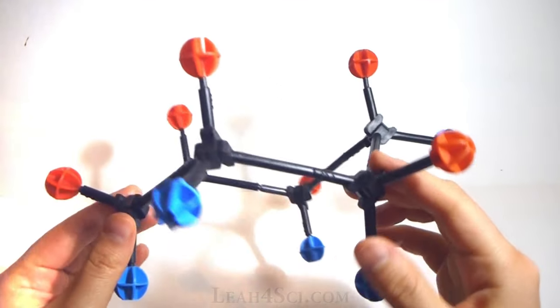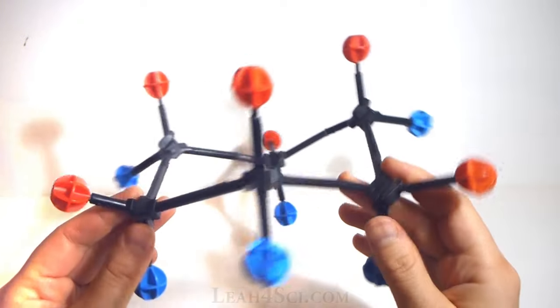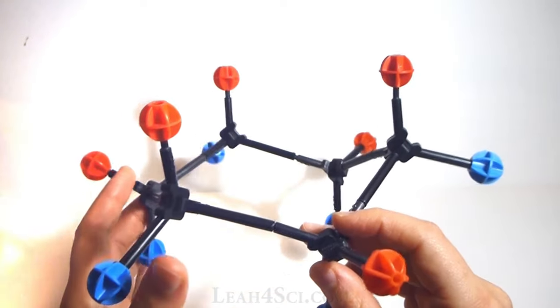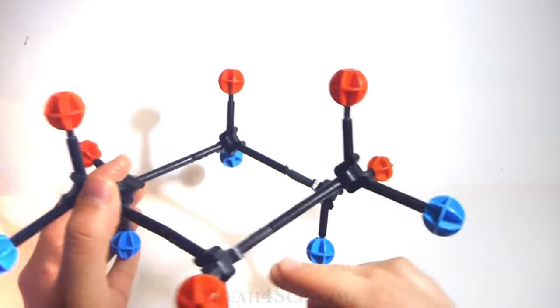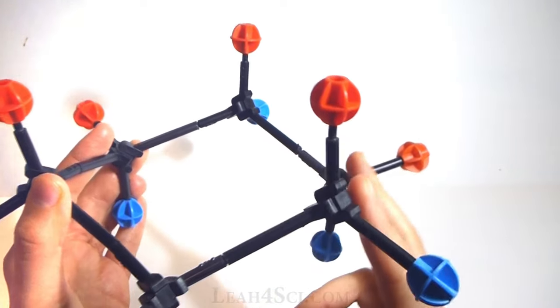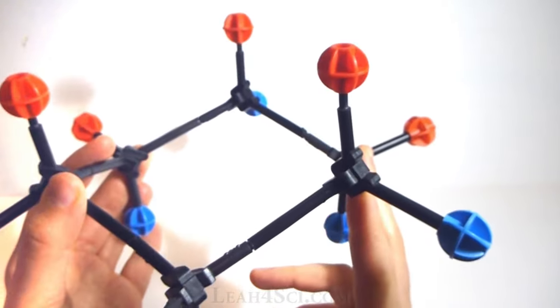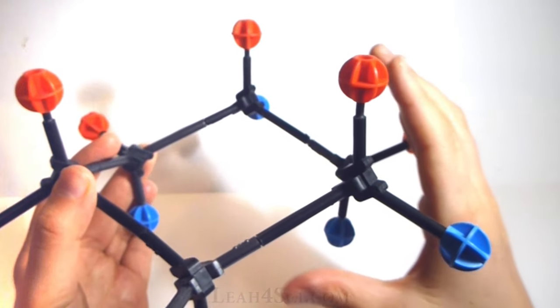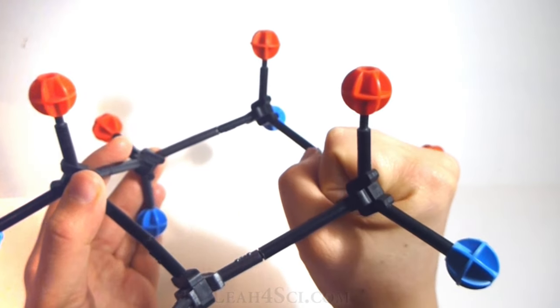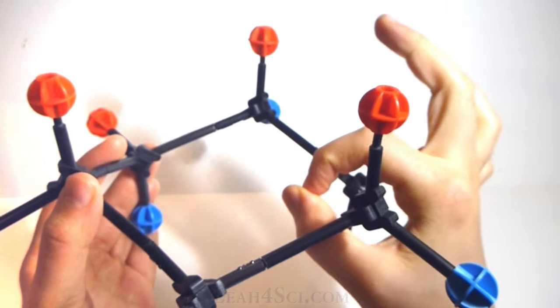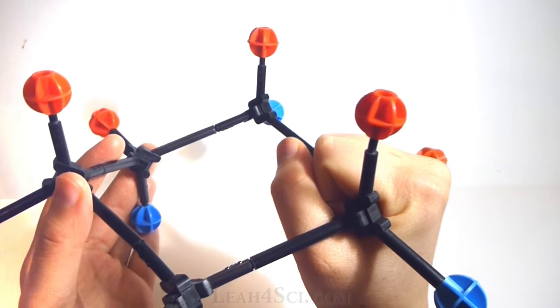This chair confirmation does not have all the substituents we saw in the example but the concept will be the same. You want to imagine that you're isolating the ring and only focusing on these two carbon atoms right here. If this is going to be our Newman projection, imagine grabbing the ring, wrapping your hand around.